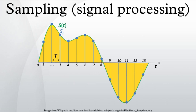That fidelity is reduced when s(t) contains frequency components higher than fs/2, which is known as the Nyquist frequency of the sampler. Therefore s(t) is usually the output of a low-pass filter, functionally known as an anti-aliasing filter.